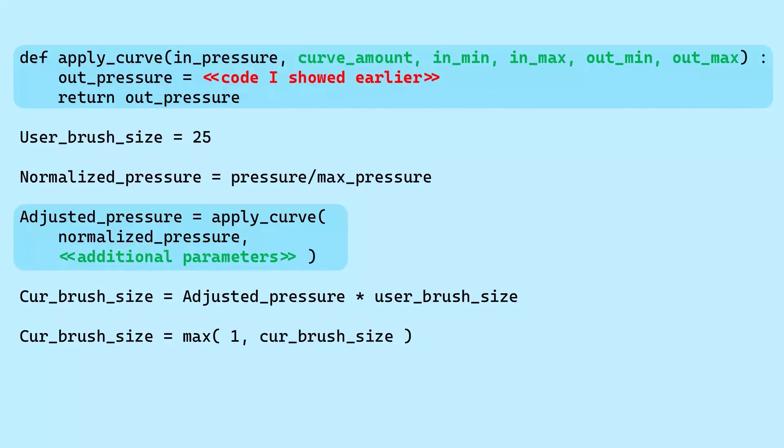And now you can see I'm just moving the sliders around and you can get very different shapes for the pressure curve with very different effects on the pressure response. The code is really very simple: we take the normalized logical pressure, which has a range of zero to one, apply the pressure curve function to it with any additional parameters we need, and get a new adjusted pressure that still ranges from zero to one. Then we multiply the adjusted pressure by the user's preferred brush size, and that gives us the final brush size we'll be drawing with.